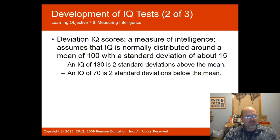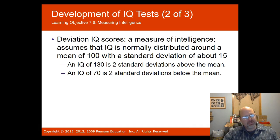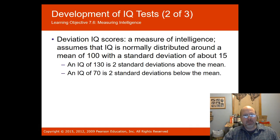If you have an IQ of 130, that's two standard deviations above the mean. If you have an IQ of 70, that's two standard deviations below the mean, which would classify someone as having an intellectual disability.